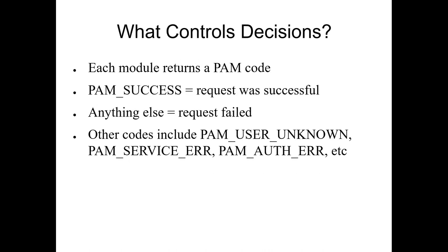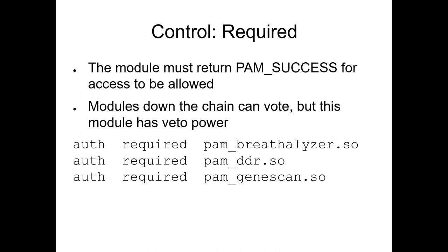Each PAM module is queried with the authentication information and returns a code. The code PAM_SUCCESS means the request was successful. Anything else means the request failed. All success looks alike; all PAM failures are unique, with different error codes for different problems. So, one thing you'll commonly see is 'required': this module must approve for access to be allowed. If this module says no, access is denied. Other modules down the chain can vote, but nobody can effectively say yes.